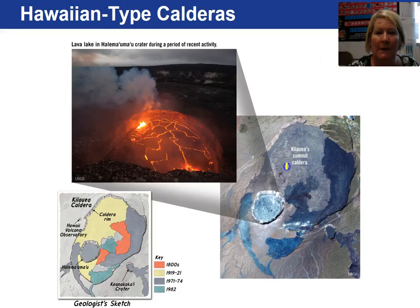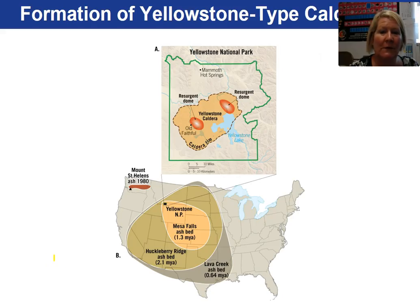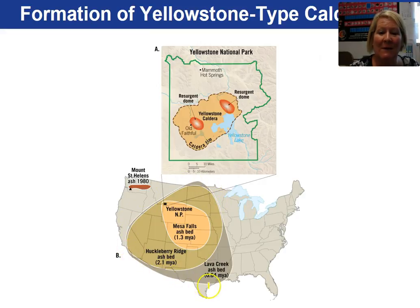Kilauea has a caldera. This is the summit picture — a close-up view and then a schematic sketch of the area. Another example is Yellowstone National Park, showing different age volcanic eruptions from 0.6 million years ago to 2.1 million years ago, and the shaded areas show the extent of the ash bed as deposited across North America.